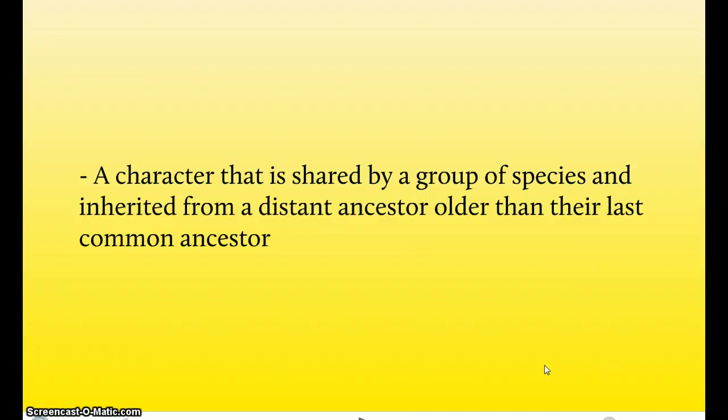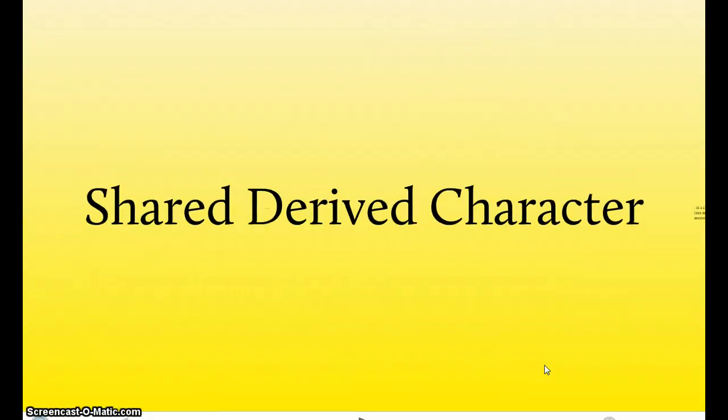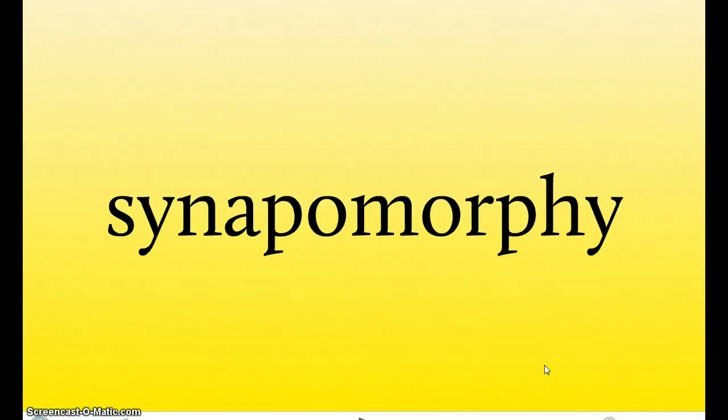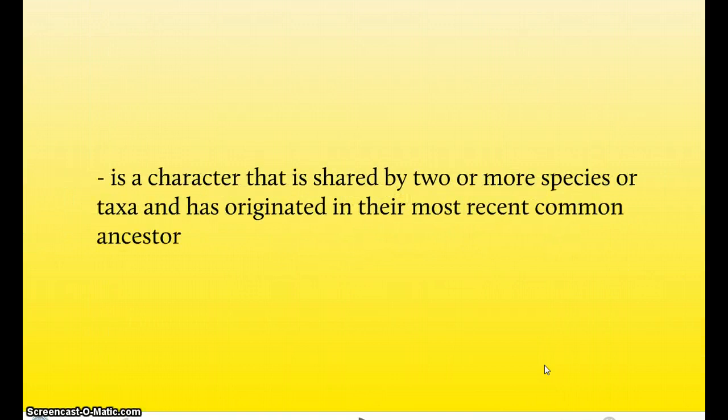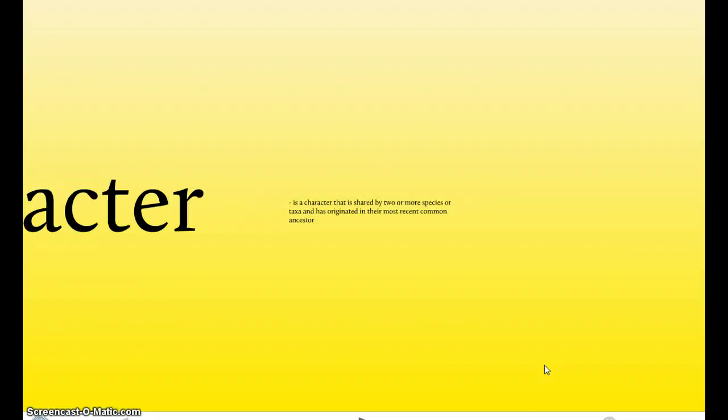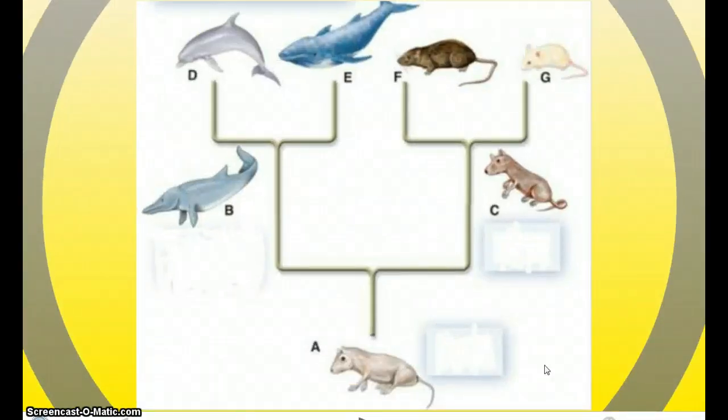And I believe you guys learned about common ancestors in 26.1 and 2. Next we have a shared derived character, also known as a synapomorphy. A shared derived character is a character that is shared by two or more species, or taxa, and has originated from their most recent common ancestor. Now, here's a diagram, and we're going to sum everything up that I just went over.